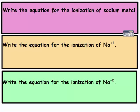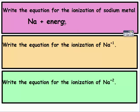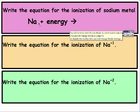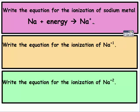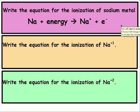To write the equation for the ionization of sodium metal: start with sodium metal, add energy, and it produces Na⁺ and an electron. Ionization energy is the energy needed to remove an electron. When you remove an electron from sodium, it becomes positive. So you start with the element, it requires energy, and it turns into the element with a +1 charge and a free electron.